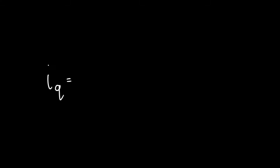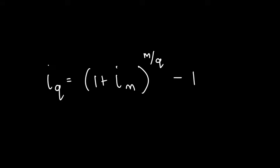The formula is IQ equals 1 plus iM to the power of M over Q, minus 1. Where IQ is the effective interest rate you want to find — the equivalent effective interest rate — and Q is the number of compounding periods you want to convert it to.